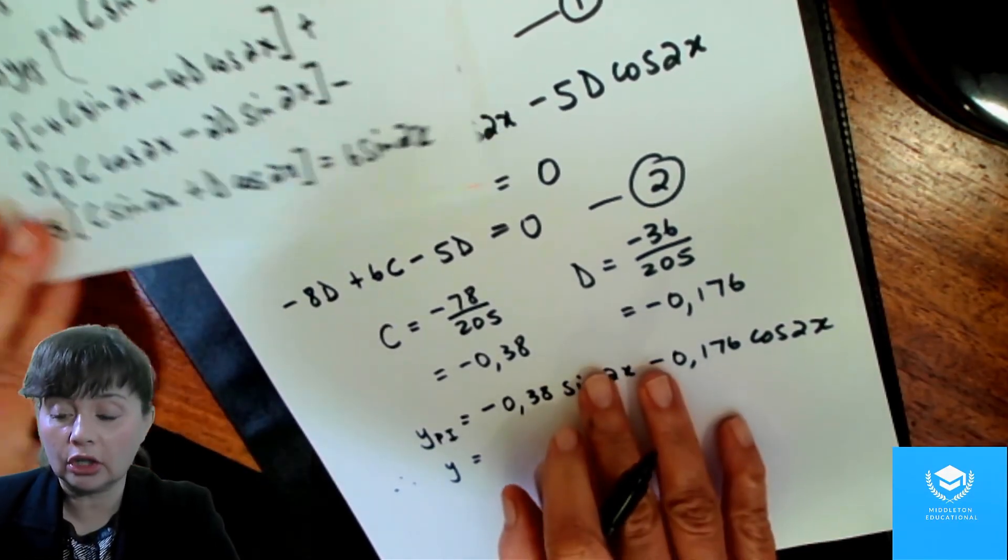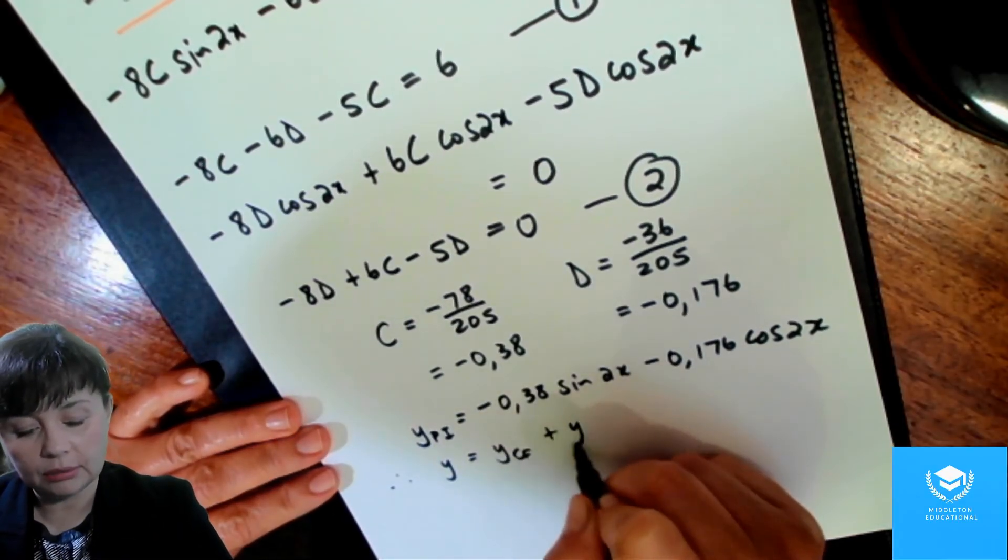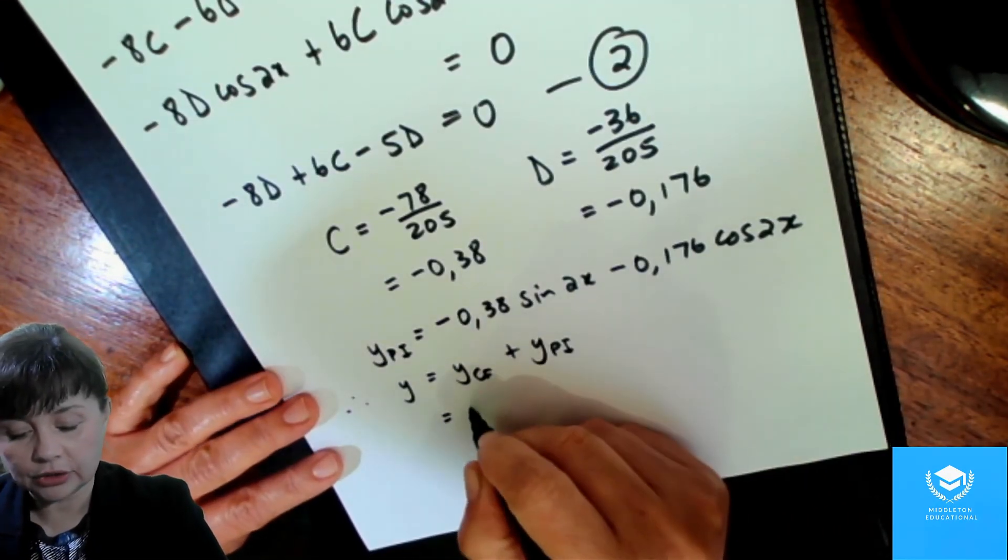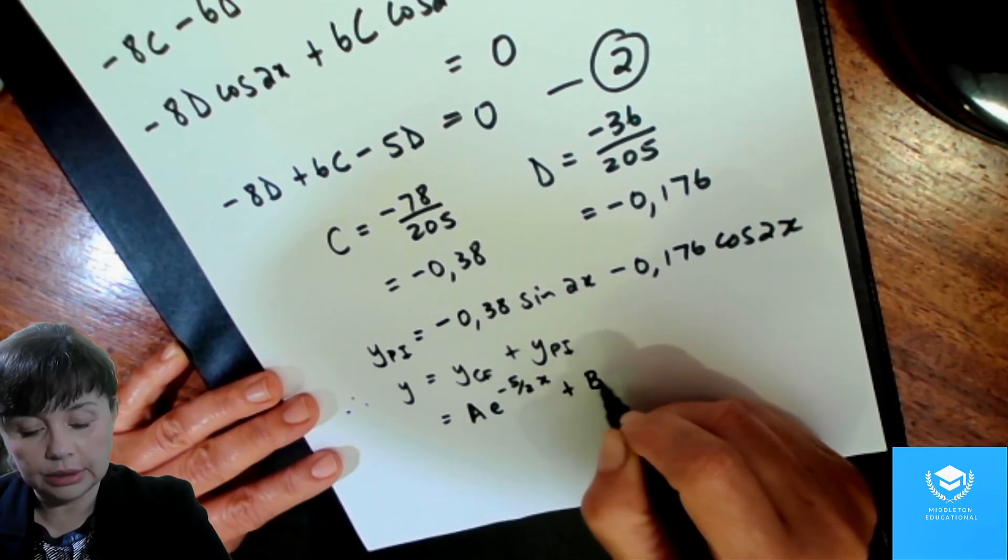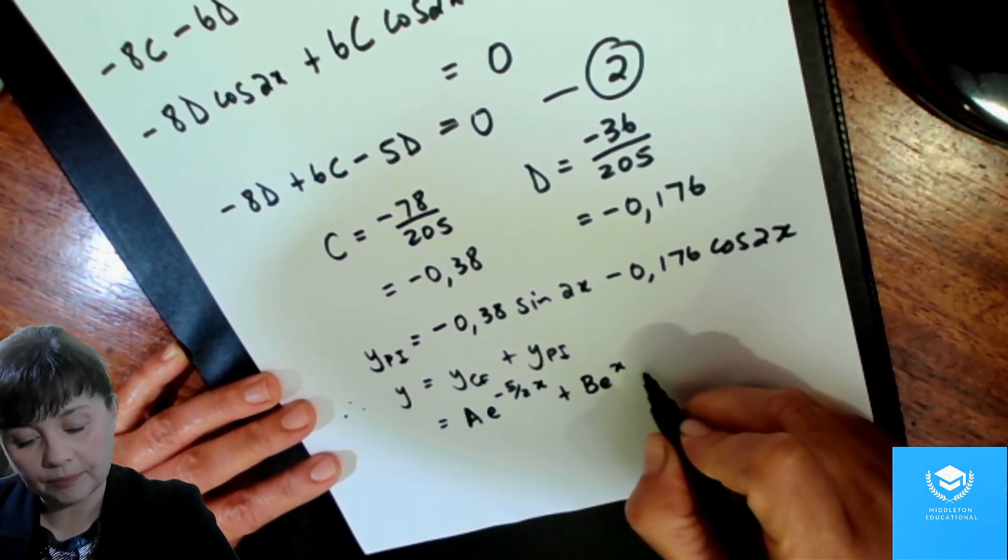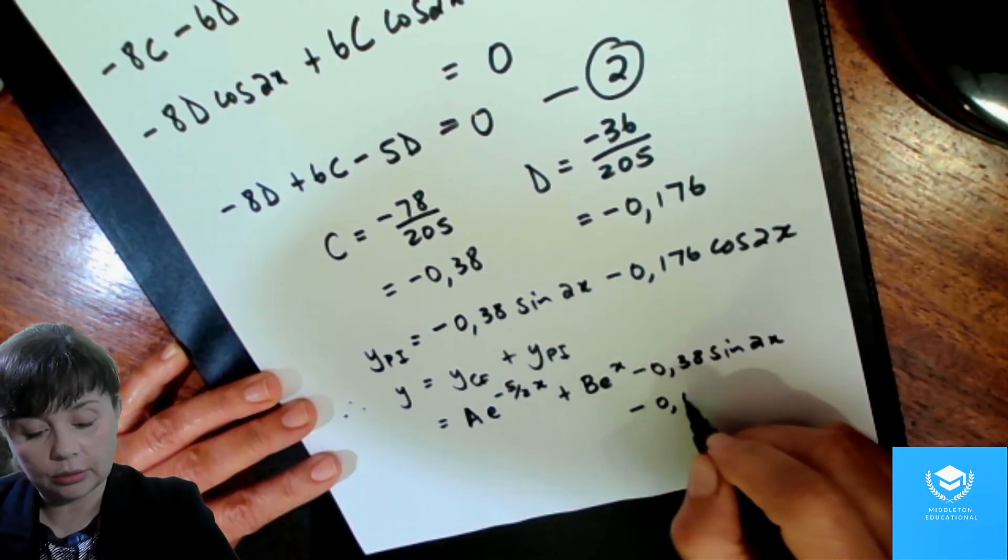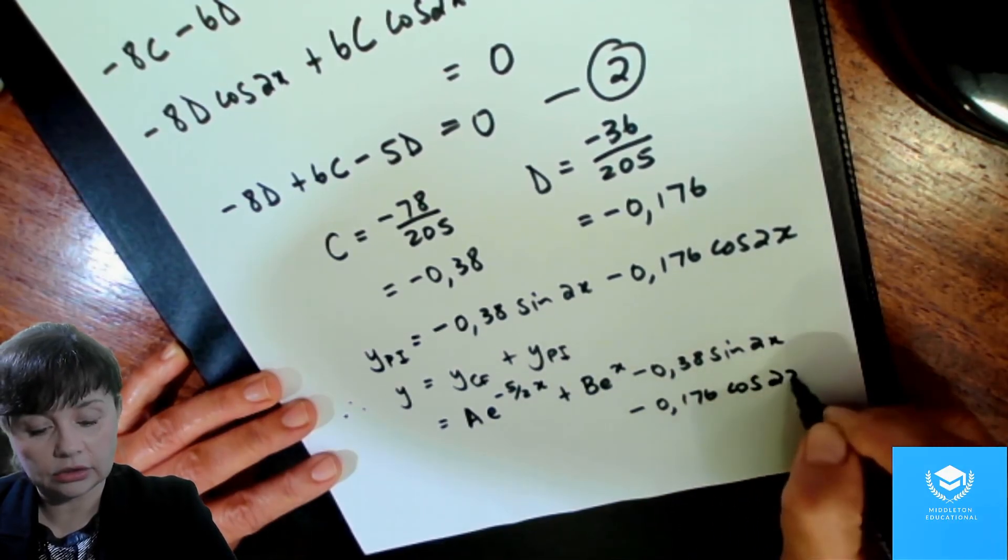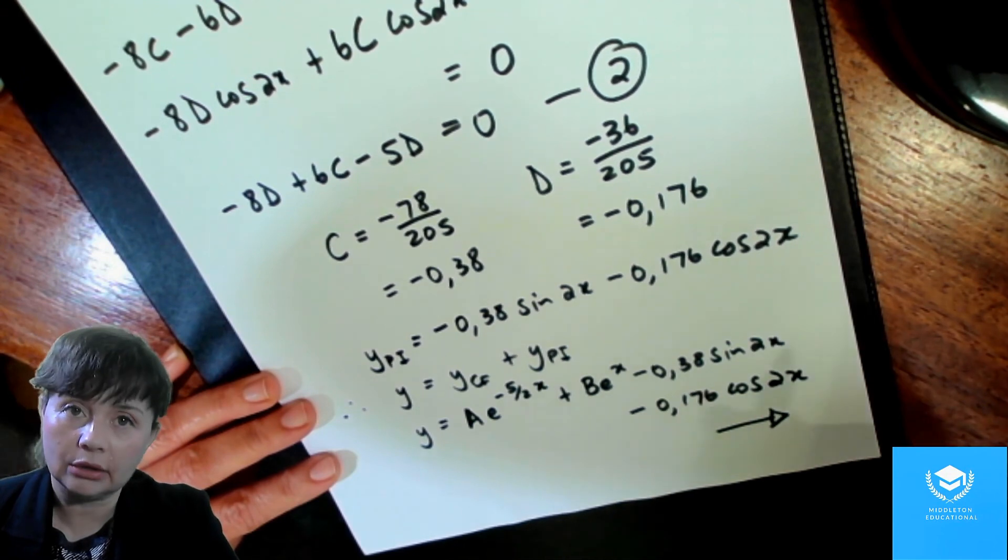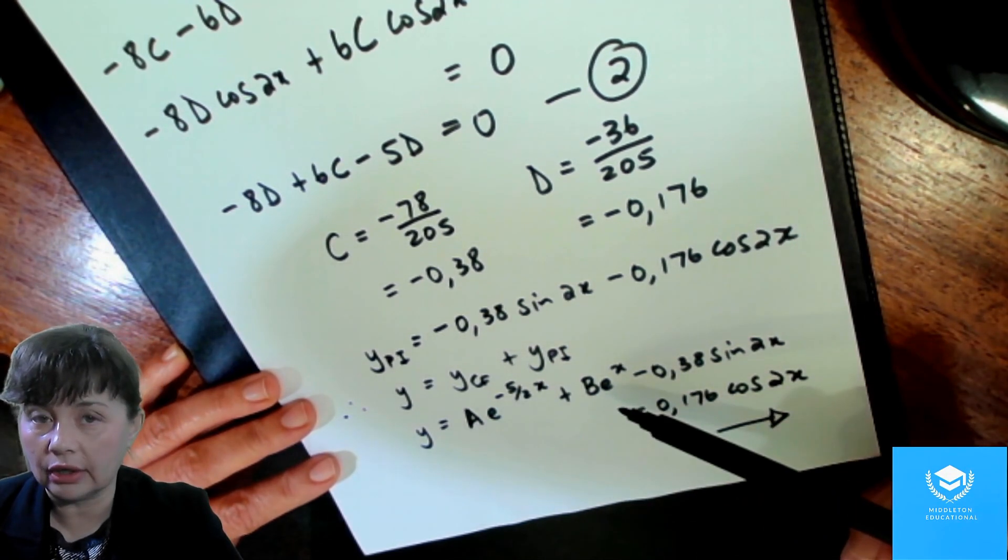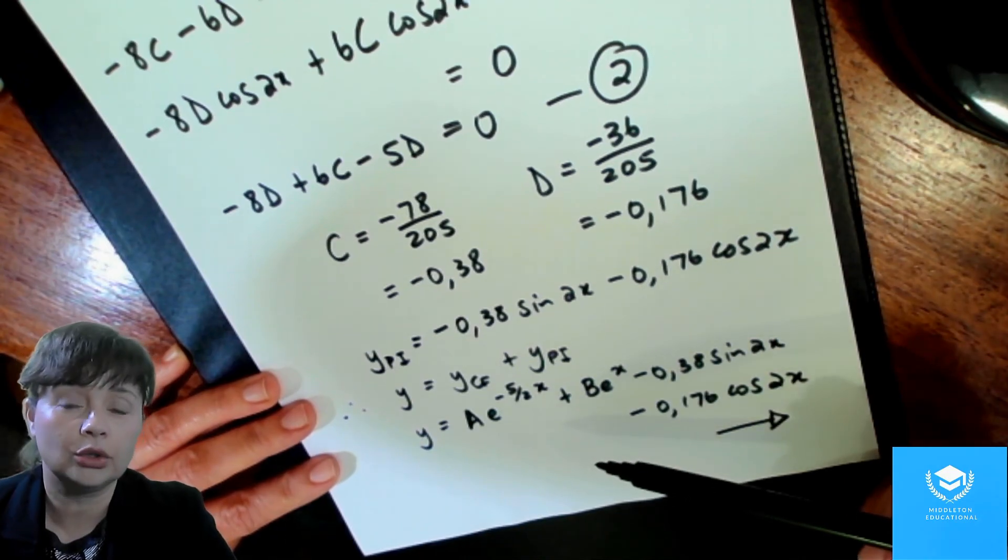Therefore, we remember that our final answer is going to be our complementary function, plus the particular integral. And our complementary function was A e to the minus 5 over 2x plus B e to the x, and our particular integral is minus 0.38 sine 2x minus 0.176 cos 2x. And that is our general solution. And you remember now, it's your general solution because you don't know what the values of A and B are. If you have initial conditions, you can now substitute it into this general solution in order to find your particular solution.